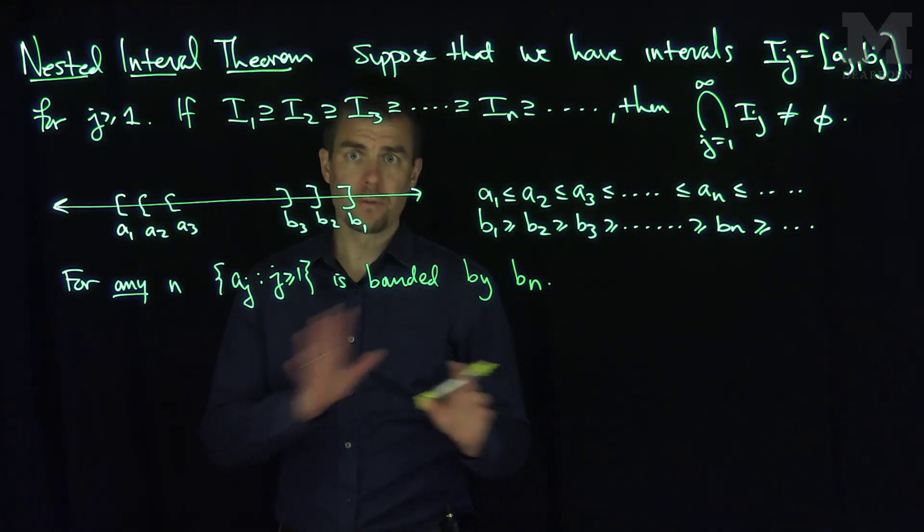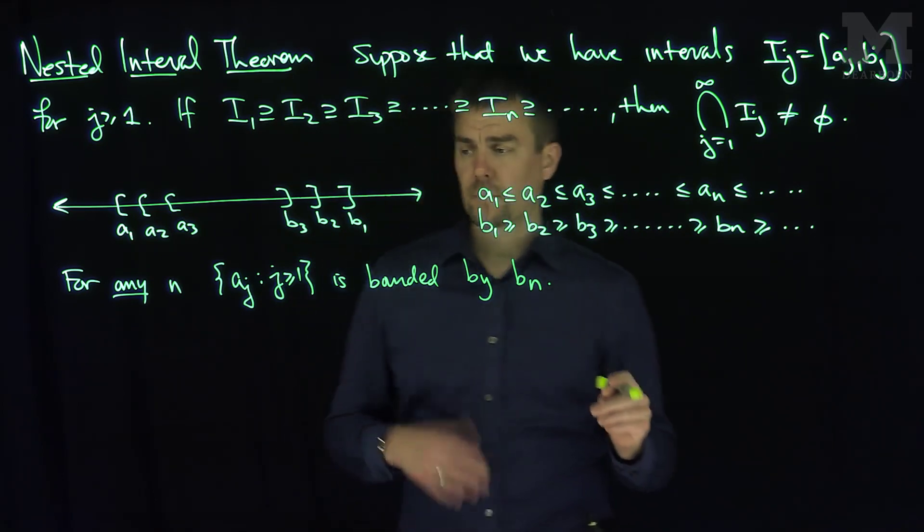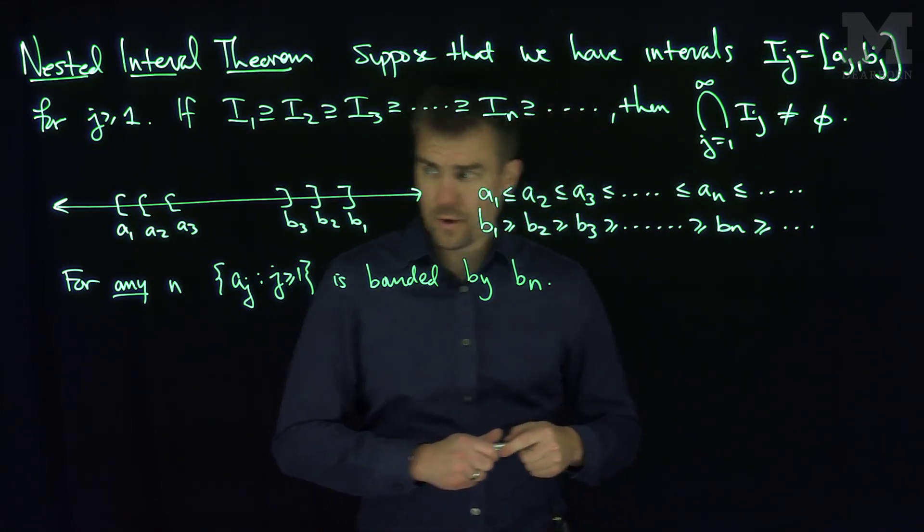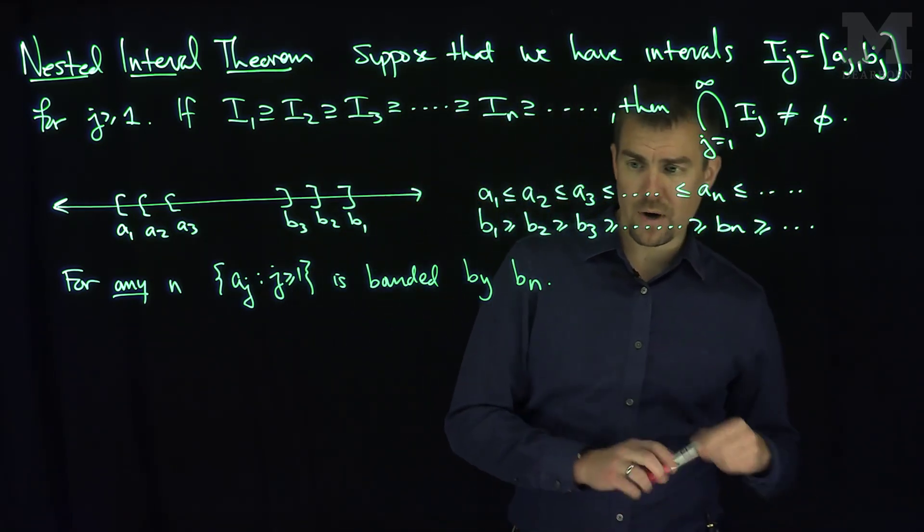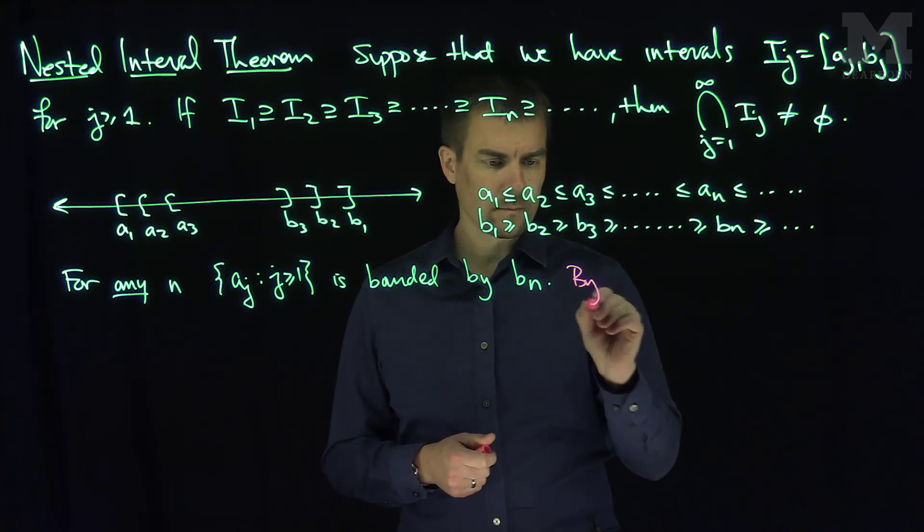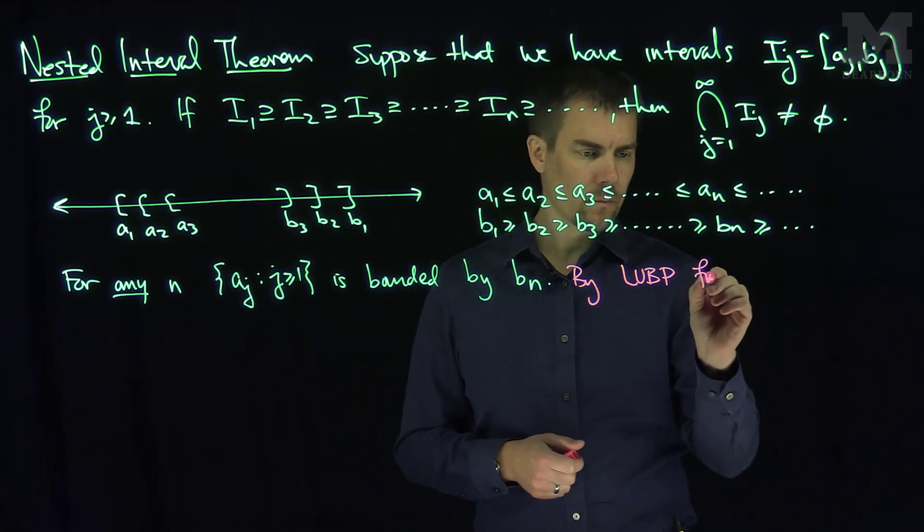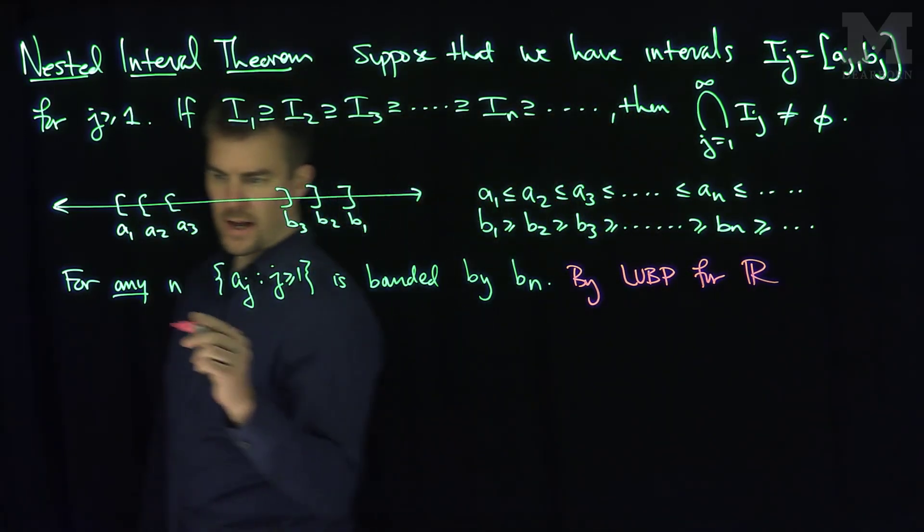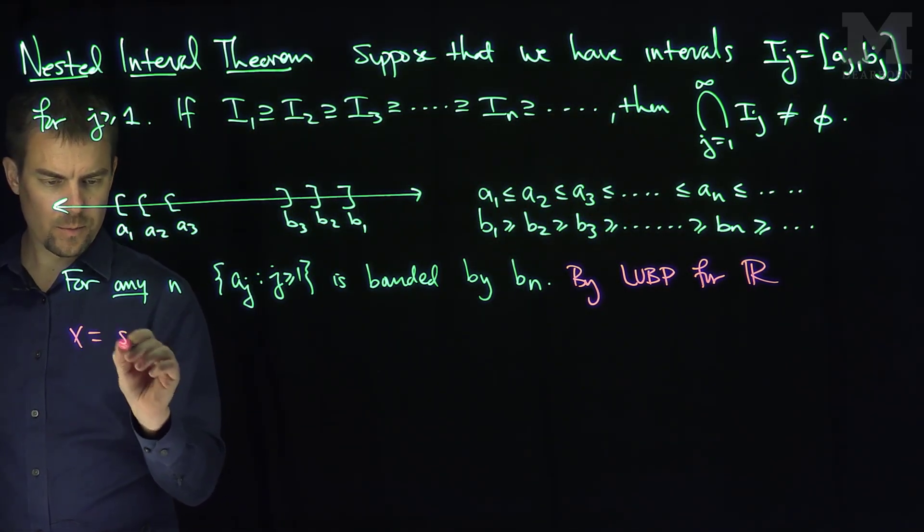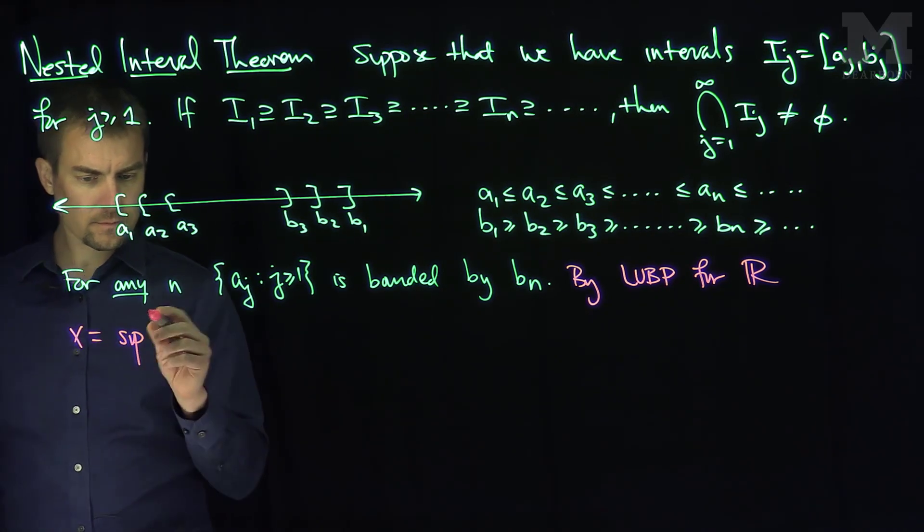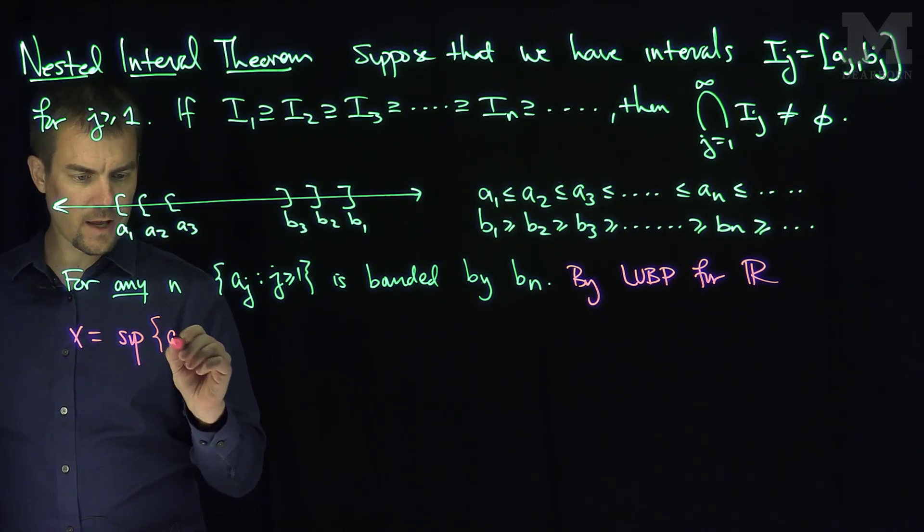So any of the bn's serve as an upper bound of the collection an. So therefore, by the least upper bound property for real numbers, I can set x to be the supremum of the set aj.